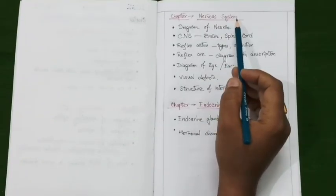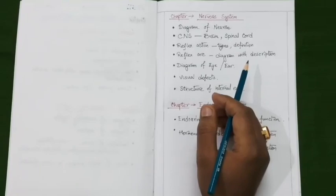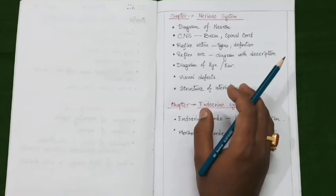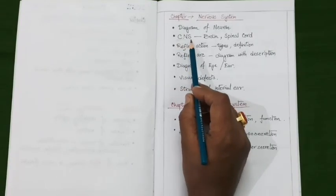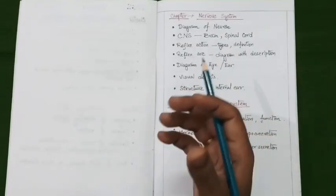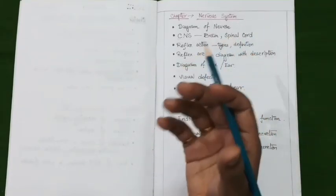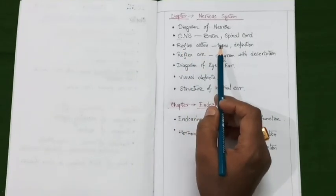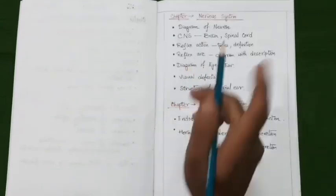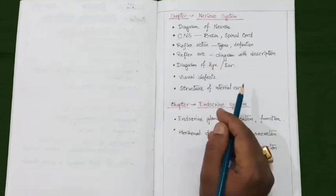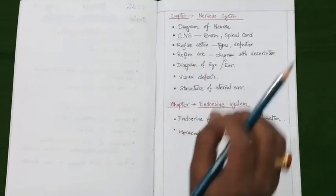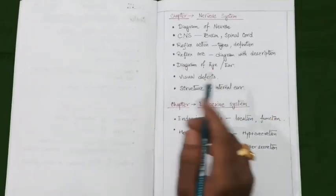Our next chapter is the nervous system. First, prepare a diagram of the neuron and know the different portions with their functions. Next, prepare a note on the central nervous system, especially the brain and spinal cord, memorizing the names of different portions and their functions. Another important topic is reflex action — memorize the different types, their definitions with examples, as these examples are very important. Also prepare a diagram of the reflex arc with a detailed description of its mechanism.